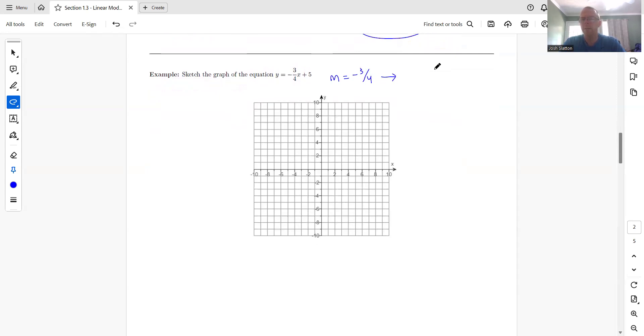So we're going to go down 3. And we're going to go right 4. So to get each next point that we want to plot, wherever we start, we're going to go down 3 and right 4. And then the y-intercept, of course, is 5. So the y-intercept as an ordered pair would be 0, 5. So we can start right there.